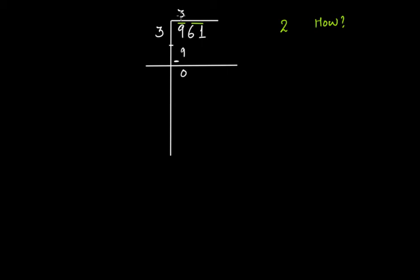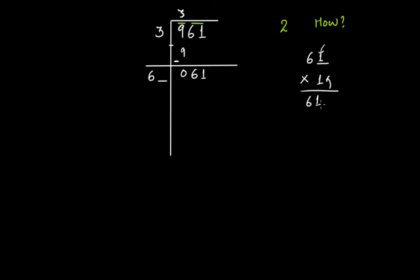Now, twice of 3 is 6. The next step is always to take twice of the quotient, write it here, and put a blank space next to it. Then bring down the next pair, so write 6 1 here. Now with this 6 and the blank space, think of a digit you can put next to 6 such that when you multiply this new number with that same digit, the result is either equal to or less than 61.